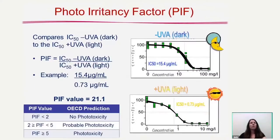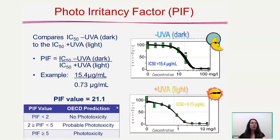Moving on, we're going to talk about two assessment pieces for phototoxicity per the OECD test guideline. The first is called the photoirritancy factor, or PIF. We compare our IC50 of our dark plate to our IC50 of our light plate. In this example, the cells exposed in the absence of light generated an IC50 value of 15.4 micrograms per mL, and in the presence of light, we have an IC50 of 0.73 micrograms per mL. So we take 15.4 divided by 0.73 and come up with a PIF value of 21.1. Using the OECD prediction threshold model, with a PIF of 21.1, this compound has phototoxicity.